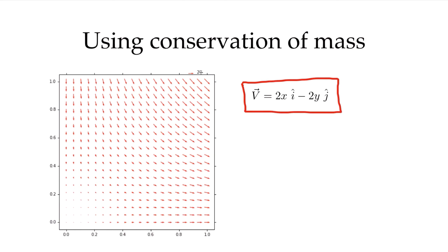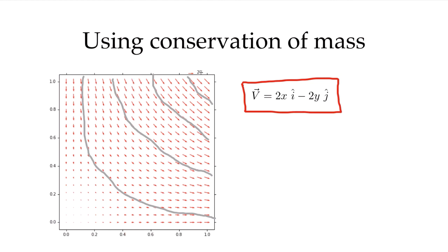Drawing the streamlines, the flow comes in through the top face, turns 90 degrees, and goes out the side face. Now consider what would happen if we had allowed an arbitrary function of x to be added to the v component. To carry mass through a surface the velocity must be perpendicular to it, so the v component carries mass through the top and bottom faces. If I add a function only of x, it changes v everywhere along the top face — but exactly the same way along the bottom face.